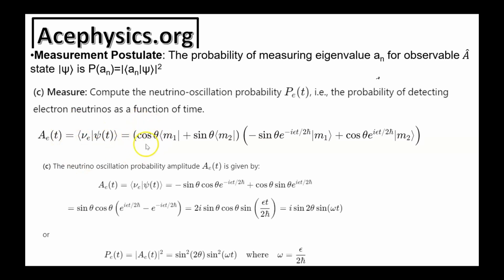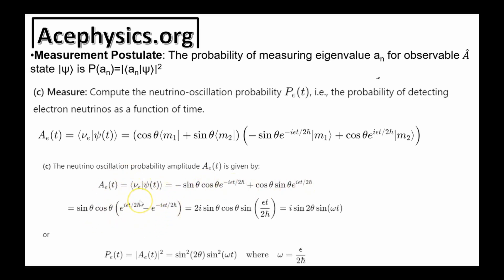We know the electron neutrino state is cosine theta times |m1⟩ plus sine theta times |m2⟩. Taking the inner product with the wave function from Part B, using orthonormality — ⟨m1|m1⟩ = 1, ⟨m1|m2⟩ = 0, ⟨m2|m1⟩ = 0, ⟨m2|m2⟩ = 1 — the amplitude is negative sine theta cosine theta times one phase factor, plus cosine theta sine theta times the other phase factor. Factoring out sine theta cosine theta, the combination simplifies to 2i sine of (e t over 2h-bar). The probability of measuring the electron neutrino as a function of time is this amplitude squared, which is the answer for Part C.